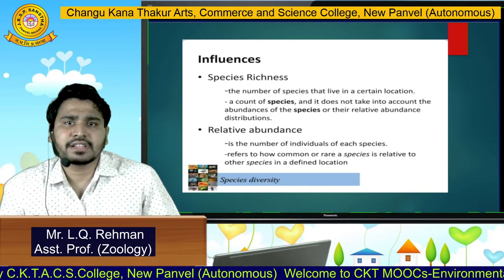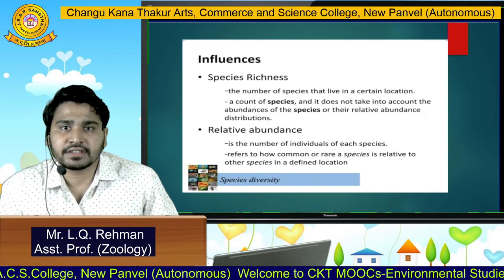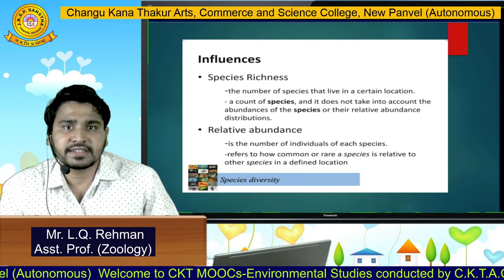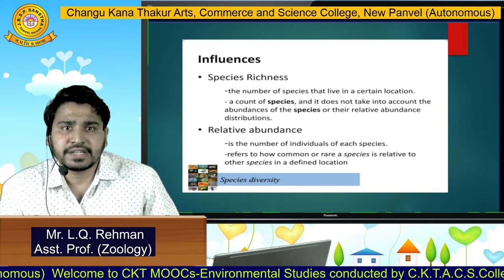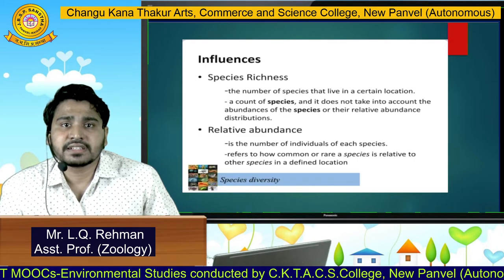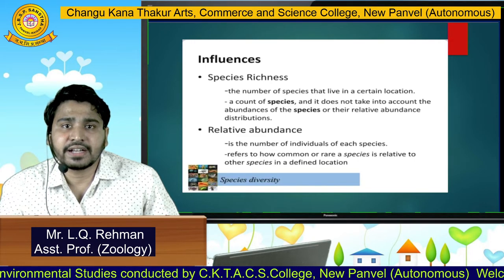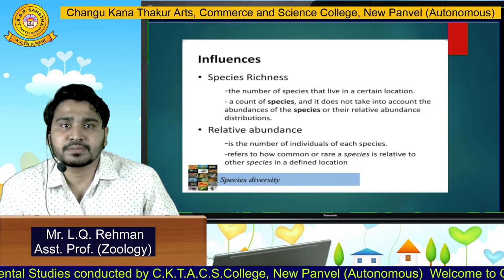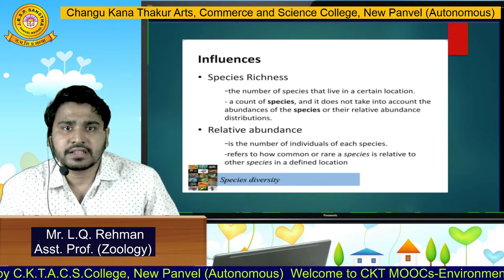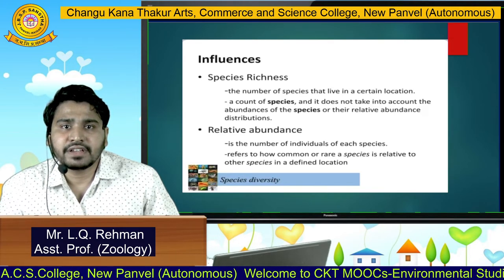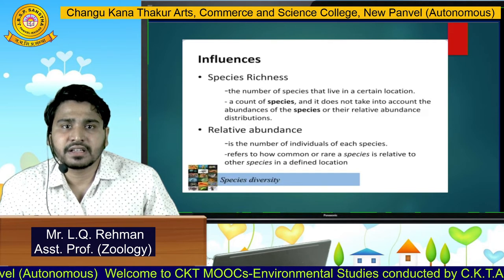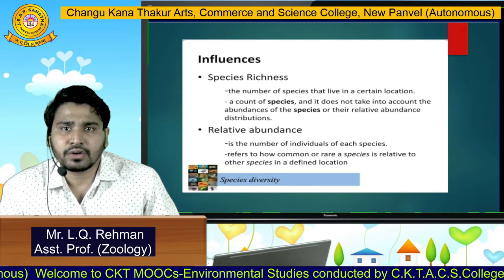What are the influences of species diversity? You can see species richness. What is species richness? It is the number of species that live in a certain location — a count of species that does not take into account the abundances or relative abundance distribution. Relative abundance refers to how common or rare a species is relative to other species in a defined location.